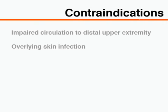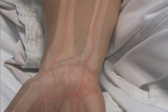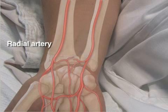Radial arterial puncture is contraindicated in the presence of a known deficiency of collateral circulation to the distal upper extremity. Some physicians advocate for the use of the modified Allen test to assess the adequacy of collateral circulation of the radial artery by the ulnar artery.